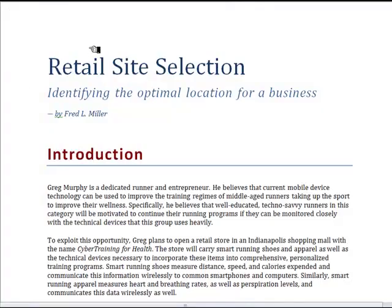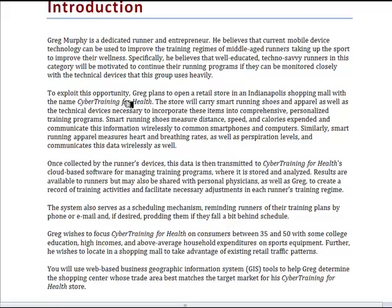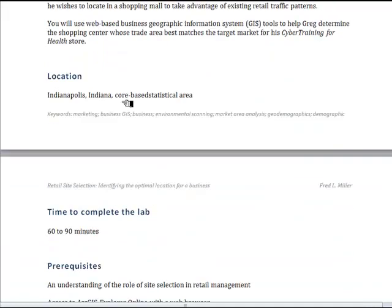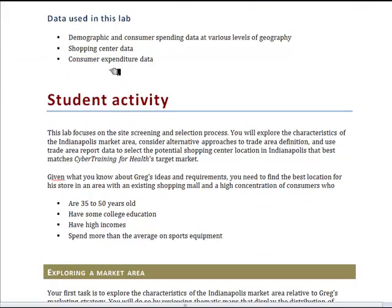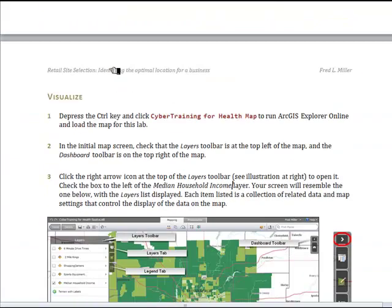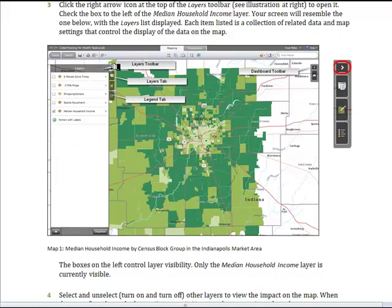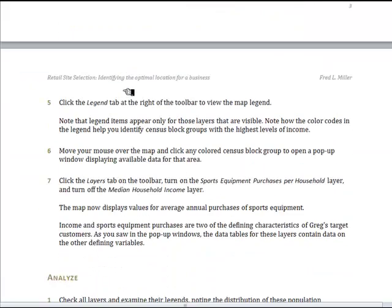Let's move to the Spatial Lab itself and walk through the steps you perform there. We begin with a more extensive summary of Greg's situation — the Cybertraining for Health scenario — which describes the concept he wants to implement. It tells you the Indianapolis area is the market he's going to use, and then describes the steps you're going to take. Notice this definition of his target market: 35 to 50-year-olds with some college education and high incomes who spend more than average amounts on sports equipment. Once you load the map, you will be able to see distributions of median household income and sports equipment purchases by manipulating the visible layers.